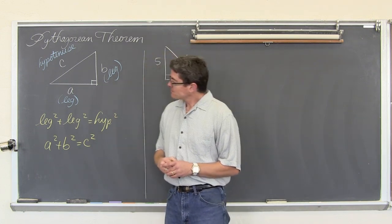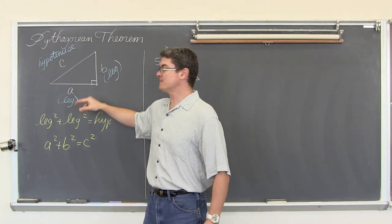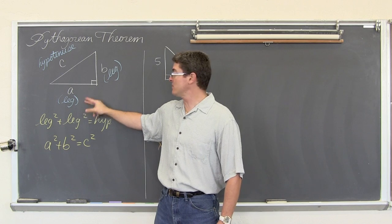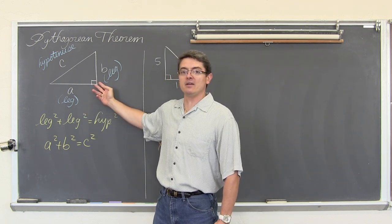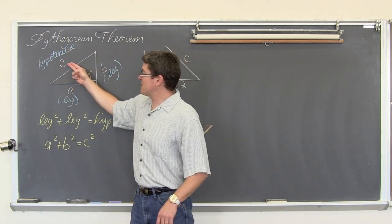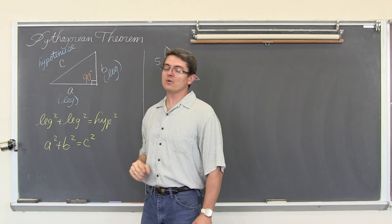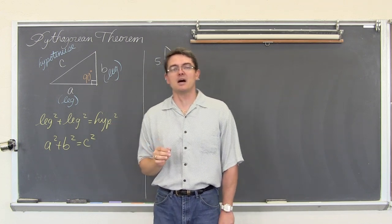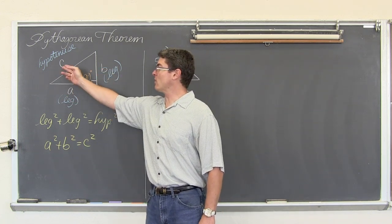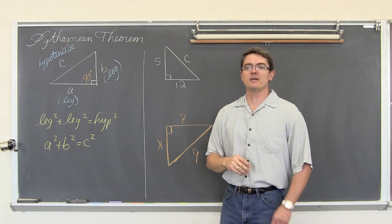The Pythagorean Theorem applies to right triangles, which of course have three sides. A right triangle will have two legs — the two sides that come together to make the right angle, or the 90 degree angle. The side opposite that 90 degree angle is the hypotenuse; it will be the longest side of your triangle. So if the legs are three and four, it would be a three, four, five triangle, and we will be able to figure that out by the end of this video.